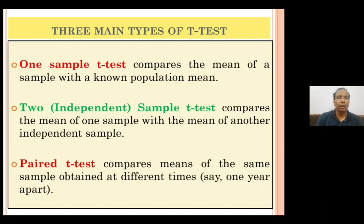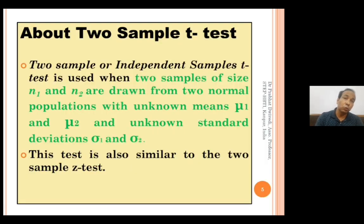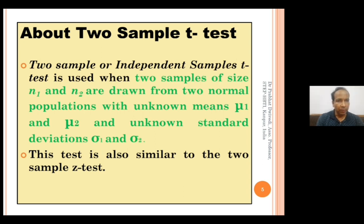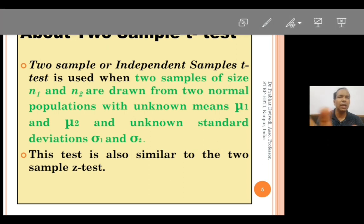Now let's see what the T-test for two samples, or independent samples, does. It compares the mean of one sample with the mean of another independent sample. This two-sample or independent-sample T-test is used for two samples of size N1 and N2 which are drawn from two normal populations with unknown means and unknown standard deviations. If you compare this T-test for two samples with Z-test for two samples, they are quite similar.